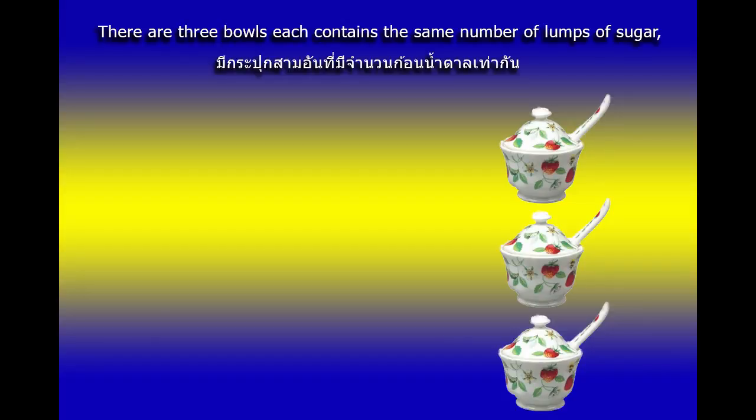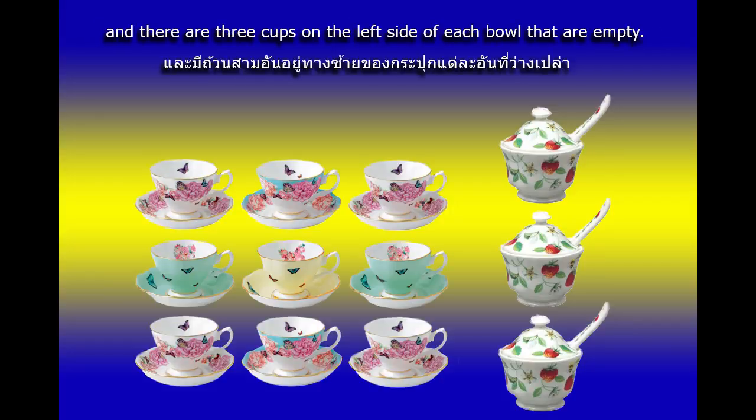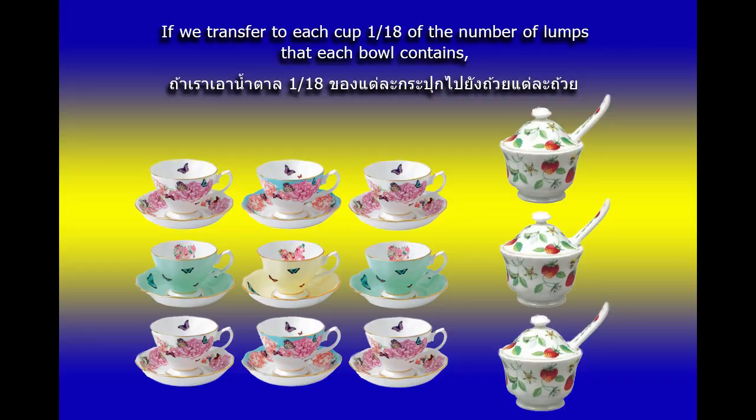There are three bowls; each contains the same number of lumps of sugar. There are three cups on the left side of each bowl that are empty. If we transfer to each cup 1/18th of the number of lumps that each bowl contains,